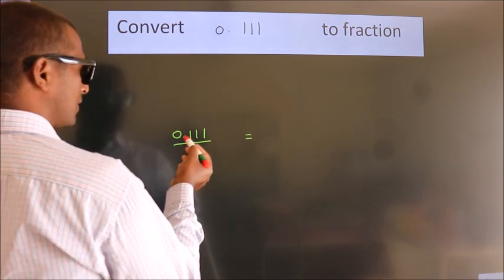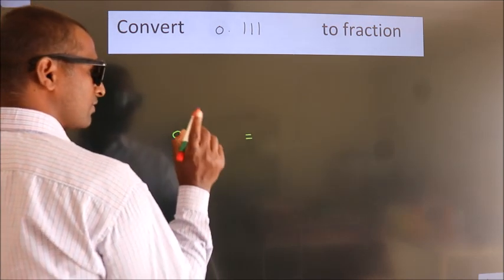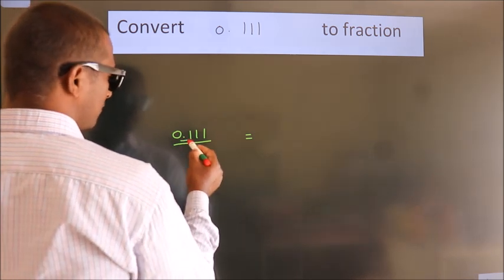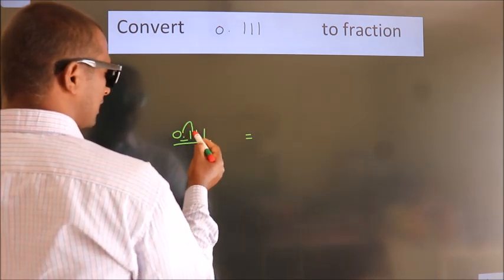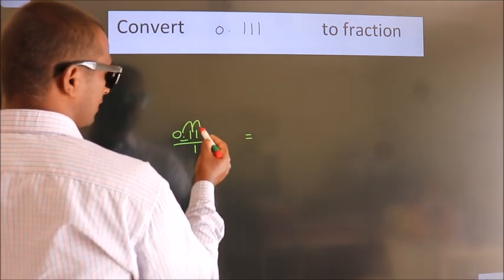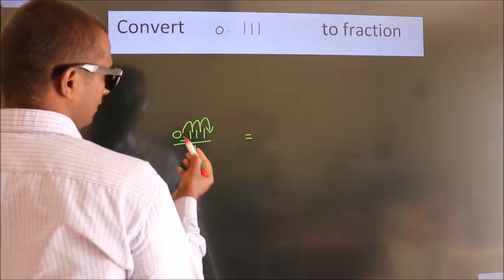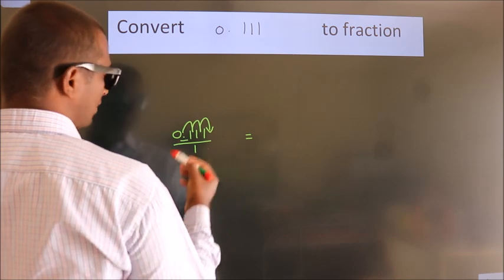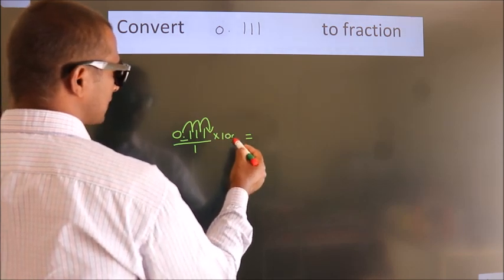To convert this to a fraction, we have to move this decimal after 1, 2, 3 numbers. To move this decimal after 3 numbers, we have to multiply it with 1000.